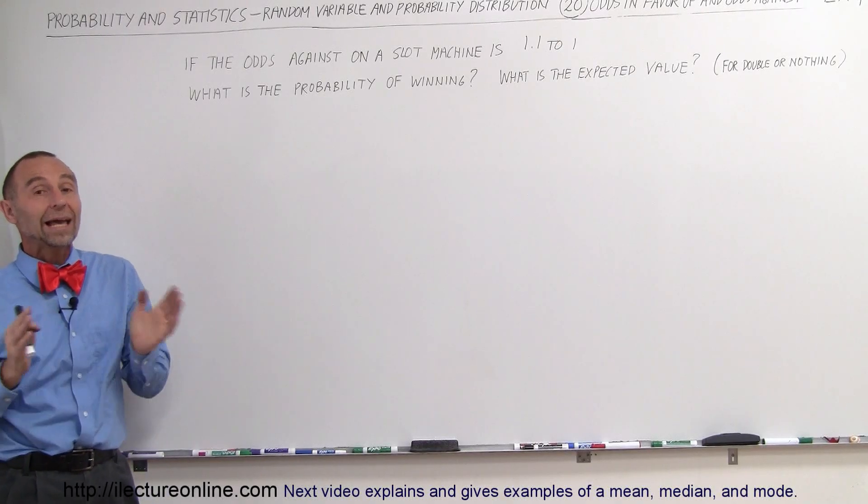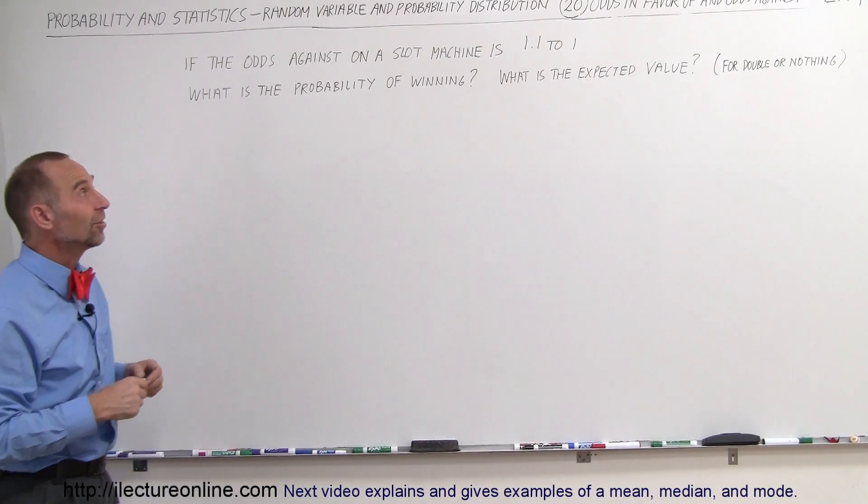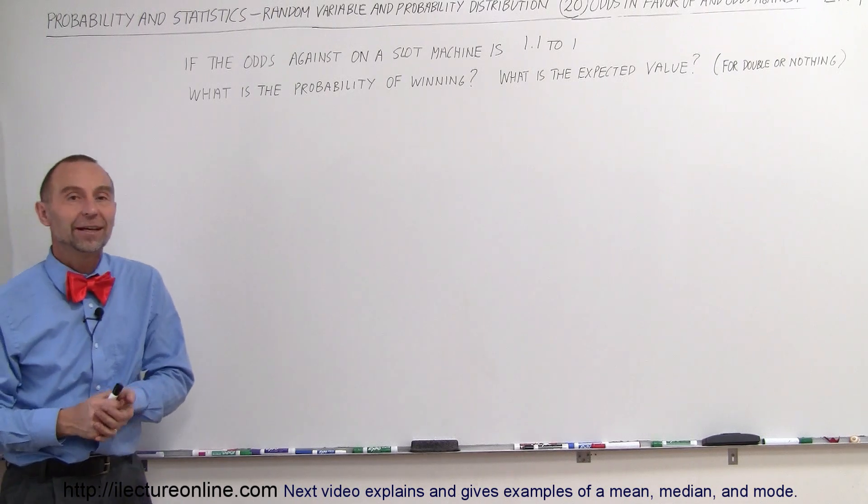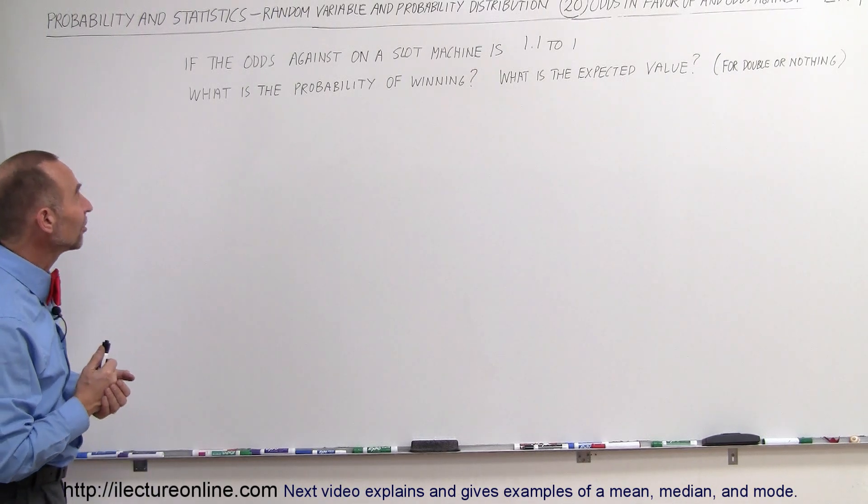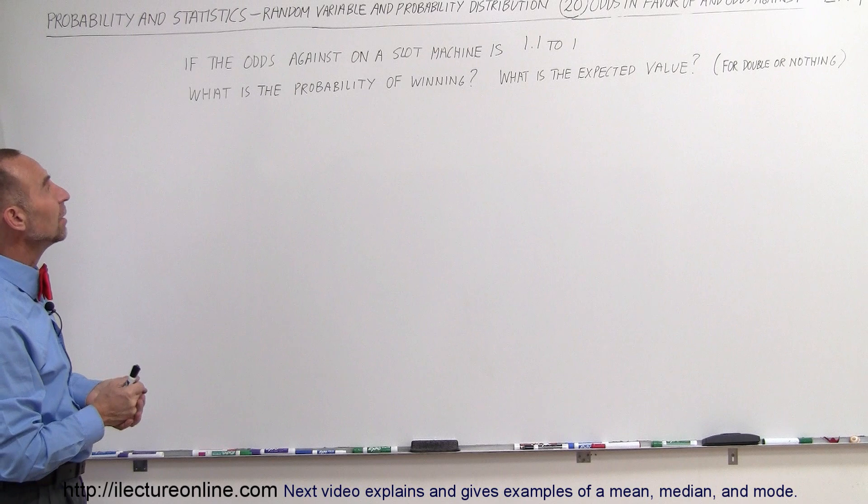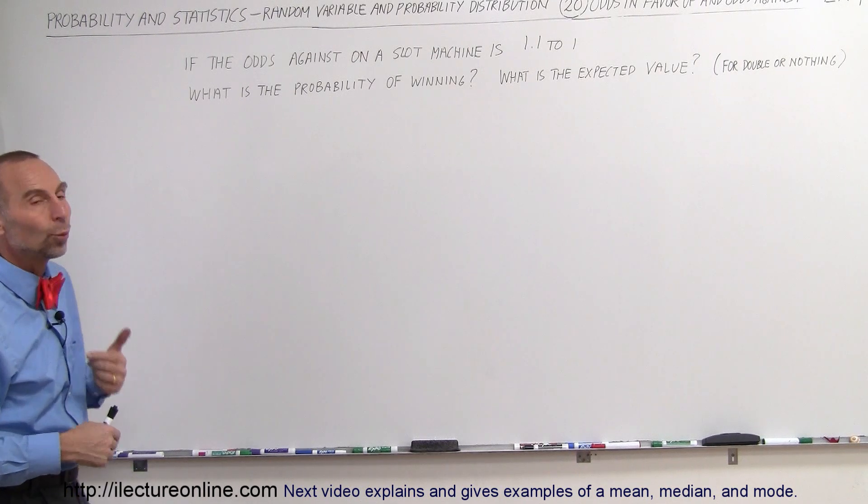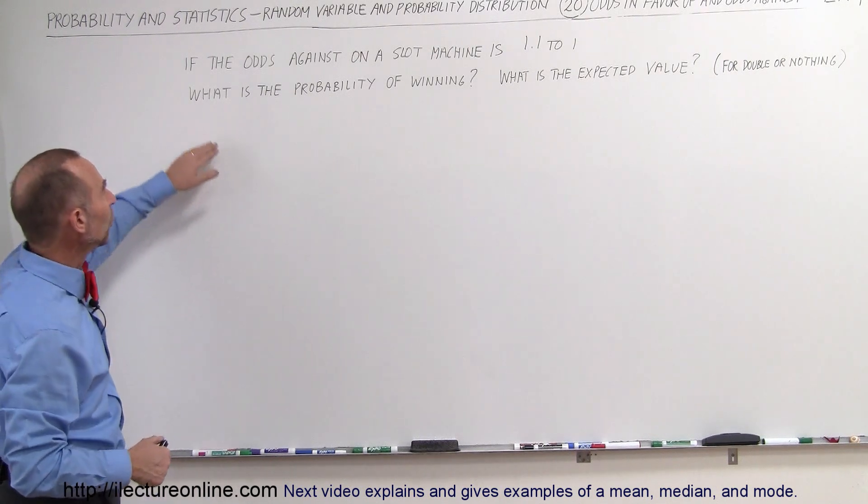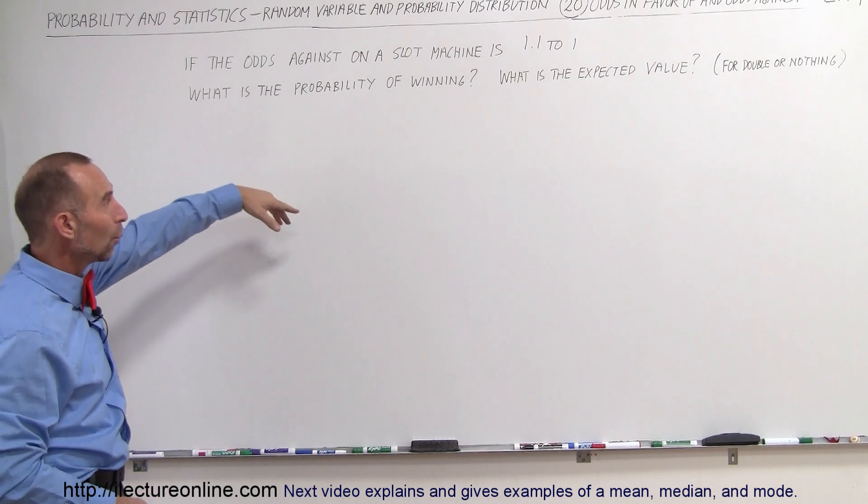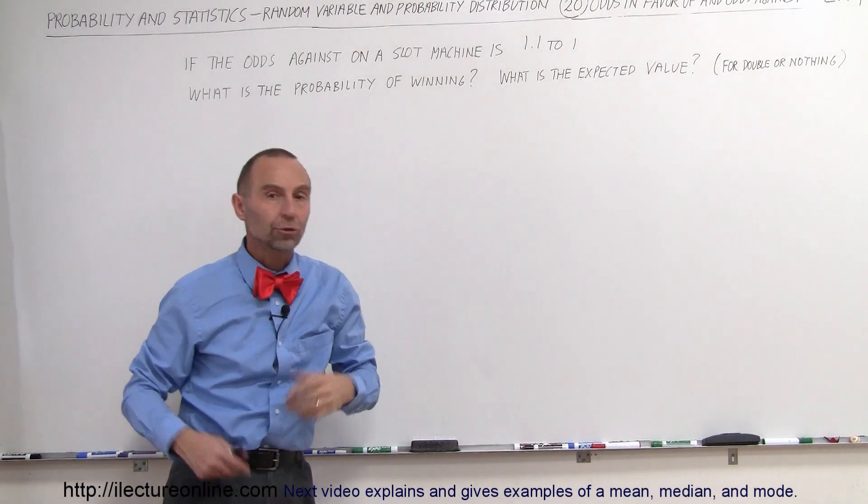Welcome to Electron Online and now let's do our last example in the series, the odds in favor of and the odds against. So in this case, let's say we're playing the slot machine and we were told that the odds against are 1.1 to 1. So we want to know what is the probability of winning and what is the expected value for double or nothing.